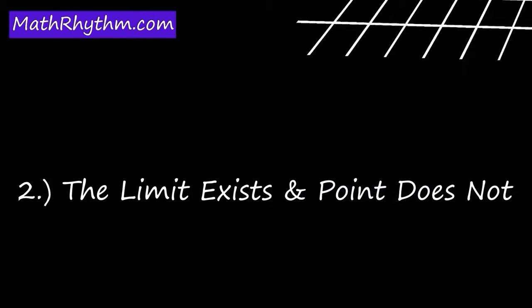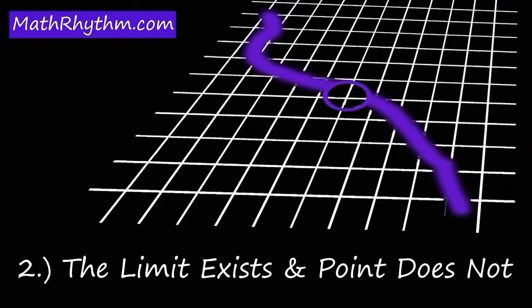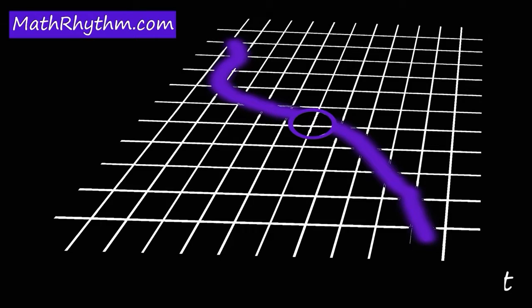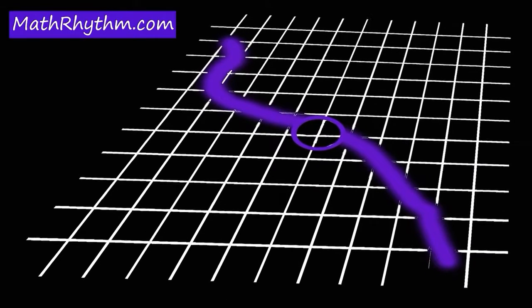Now let's take a look at the second scenario. This is a very important one to consider. This is the case where the limit exists but the point does not exist. This is a little bit different from what you might have seen in algebra, and it only really happens in a calculus course.